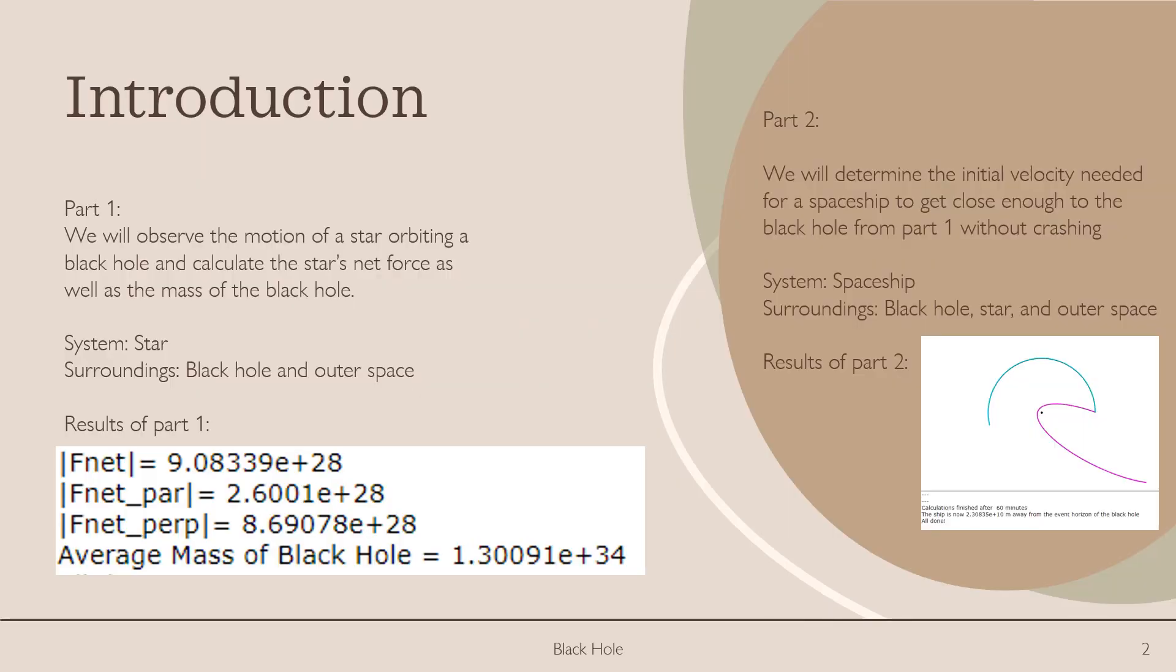So to kick things off, this lab is split into two parts. In the first part, we're going to observe the motion of a star orbiting a black hole, and then we're going to calculate the star's net force as well as the mass of the black hole. In this part of the lab, the system is the star, and the surroundings are the black hole and outer space. Below you'll see the results of part one, and we'll get into this later.